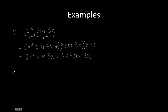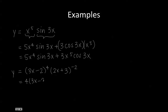For a second example, our factors are 3x minus 2 to the power of 4 multiplied by 2x plus 3 to the power of negative 2. The derivative of the first factor is equal to 4 times 3x minus 2 to the power of 3, and using the chain rule, we multiply by 3, and then multiply by the second factor.